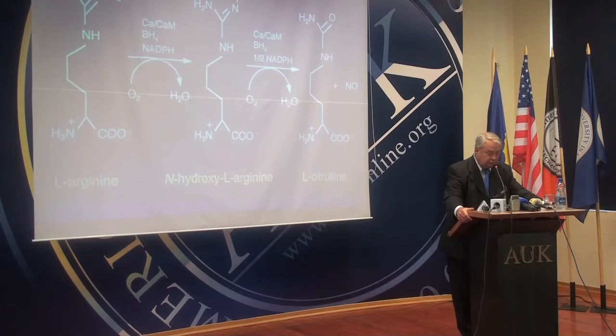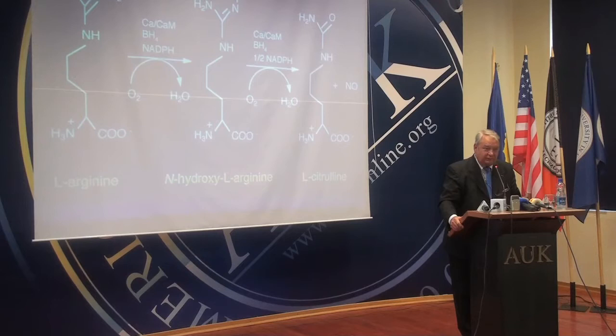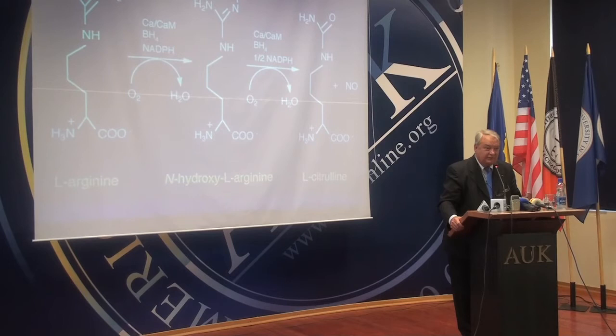For example, if you have a deficiency of tetrahydrobiopterin, the enzyme no longer makes nitric oxide. Instead, it makes another free radical, superoxide anion, which is also very reactive. That will combine with nitric oxide to make a toxic species called peroxynitrite. And that's what happens with inflammation — you induce the production of NO and superoxide and make a lot of peroxynitrite. You end up with a lot of proteins that get modified because of that.